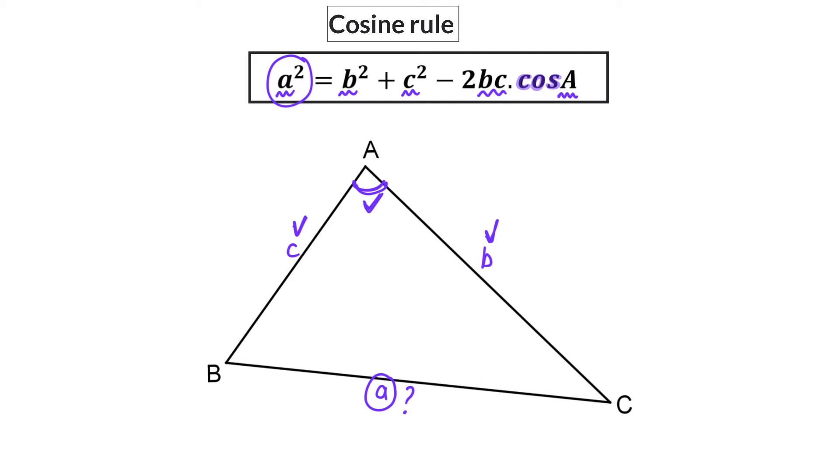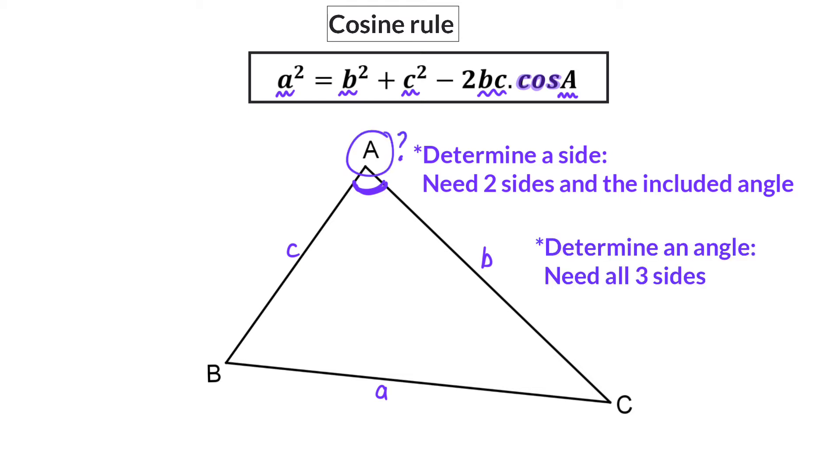The first case where you can use the cos rule is when you want to determine a side length, and you have the other two sides, as well as the angle in between, which we call the included angle. The second case where you can use the cos rule is when you want to determine an angle size, and you already have all three side lengths.